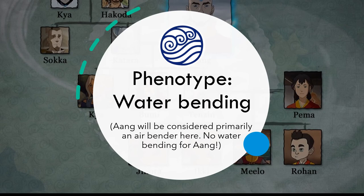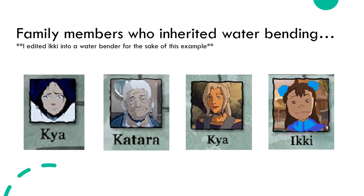Aang here will be considered primarily an airbender, which may be a surprise for some of you who know that he's actually a master of the four elements in the TV show. Family members who inherited waterbending are: Kia — Katara's mother — Katara, Kia her daughter, and Ikki her granddaughter.